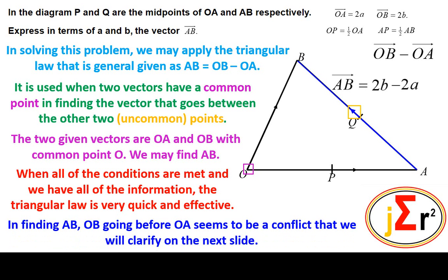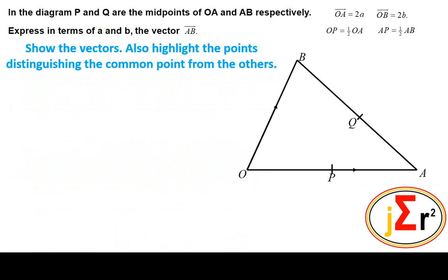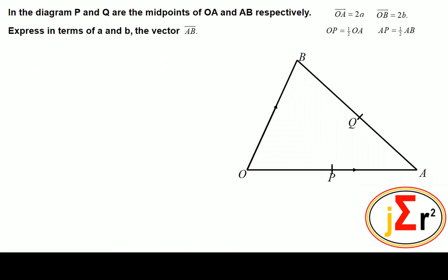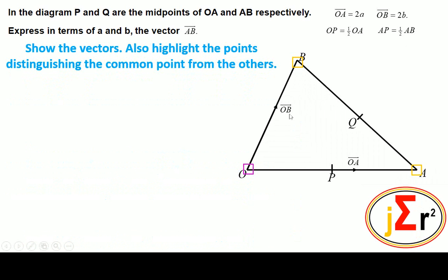In finding AB, OB going before OA seems to be a conflict, and we will take a look at that. If students try to internalize, memorize, or recall the triangular law, because it is AB, students have a tendency to say OA minus OB. But the law is OB minus OA. Why is that so? We will show the vectors involved: OB, which is this one, OA, which is this one, and of course we have the common point O, and we are finding the vector that goes between the other two points.